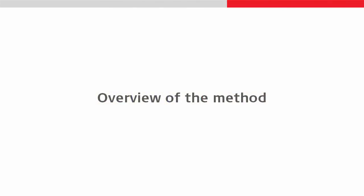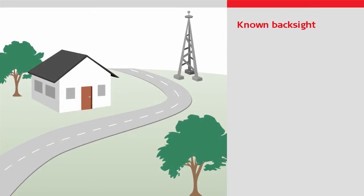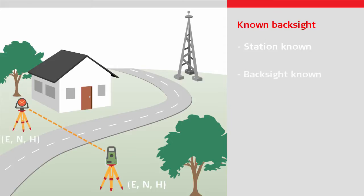The known backsite method can be used in the following case: if the point over which you will position the total station is known, and there is only one backsite and the point where the backsite is located is known. Normally this will be a prism mounted on a tripod, but it could also be a reflective tape mounted on a wall or even simply a mark on a wall. You don't need to be able to measure a distance to the backsite — that is optional — but you do need to be able to see the backsite.